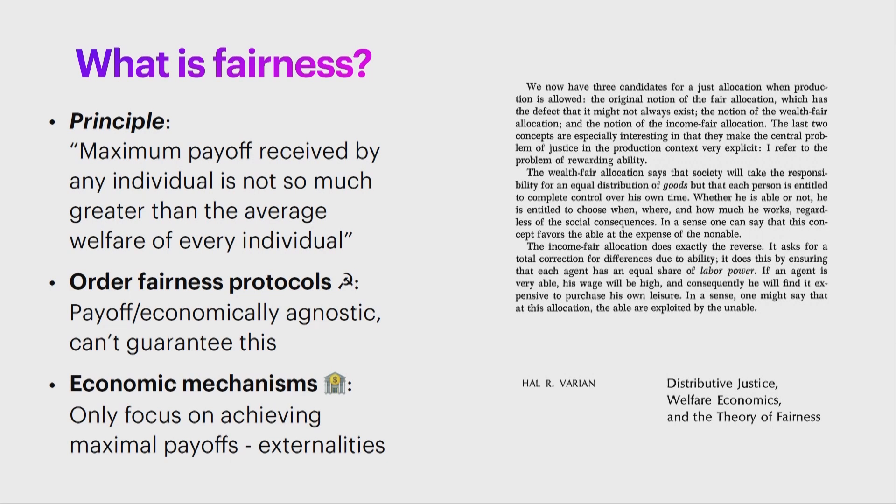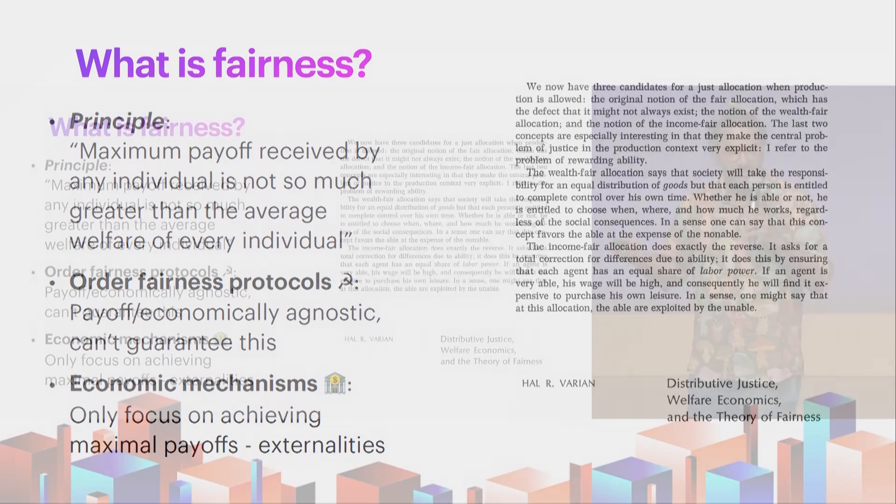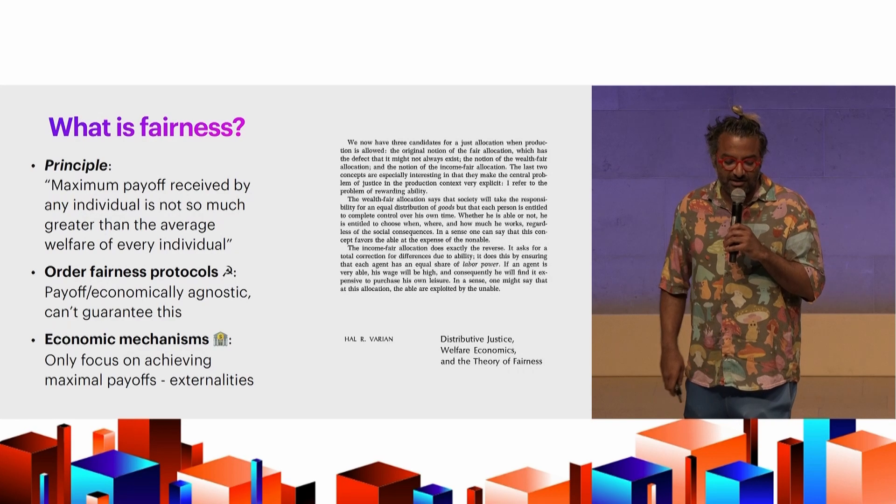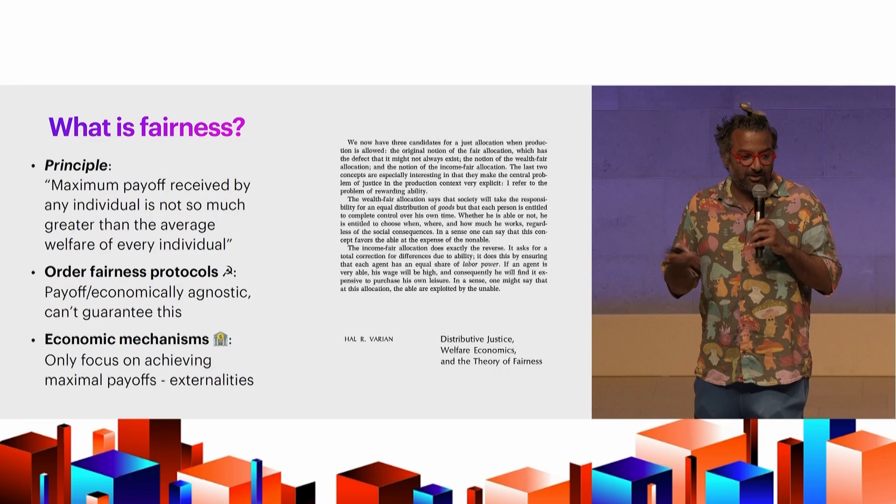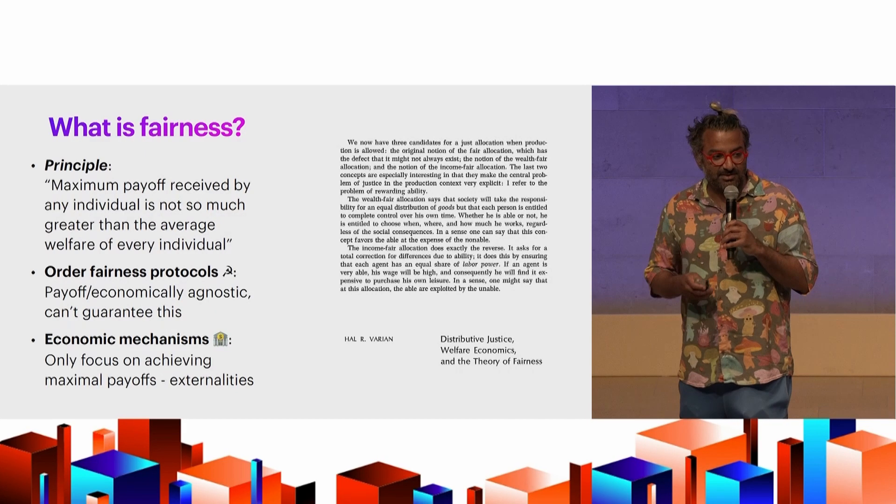And you could argue that the communists, the order fairness things, focus on one side of this, but they're very payoff agnostic. They kind of can't tell you anything about whether you're getting the worst case or best case. And the economic mechanisms sort of focus on maximizing payoffs, right? Maximizing revenue that goes to validators, maximizing revenue that goes to the system. But it doesn't really capture the externalities necessarily as well as you might think. And so one question is, how do you get this balance between maximizing revenue, which obviously can be good for the stability of these systems, especially if they rely on arbitrage, versus making sure the expected welfare for all participants, on average, is not so far away from the worst case?